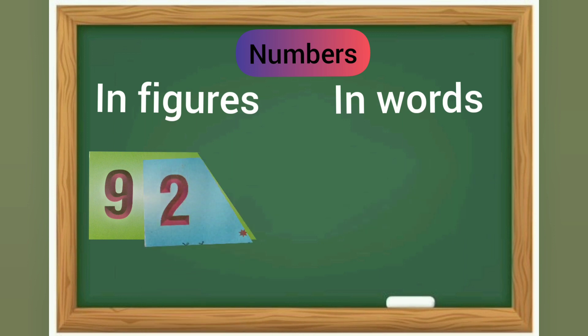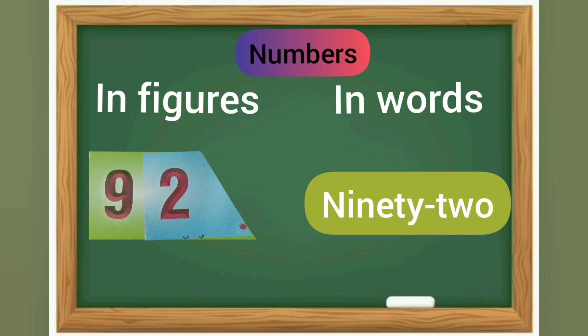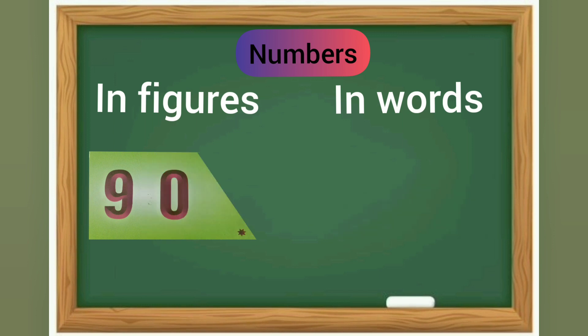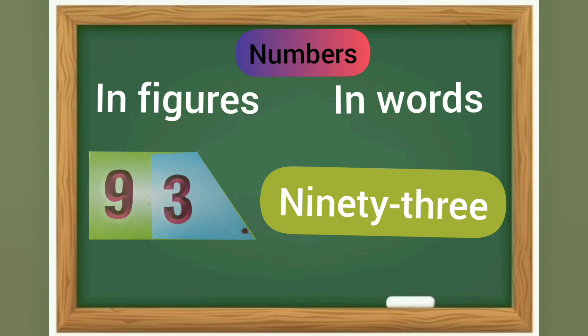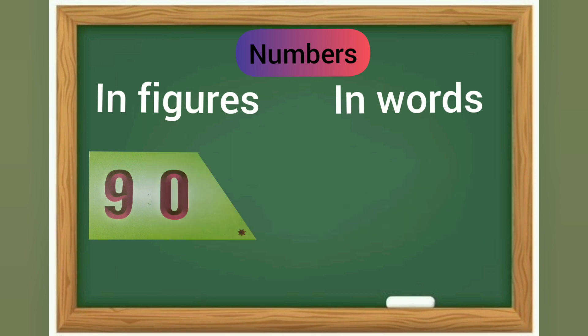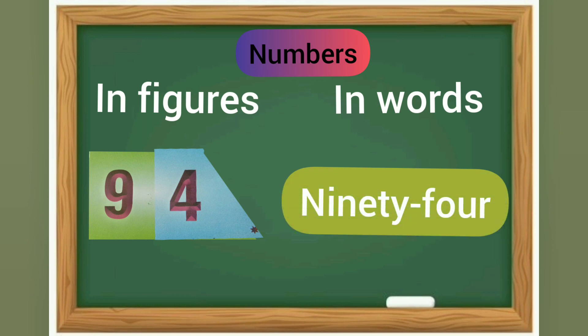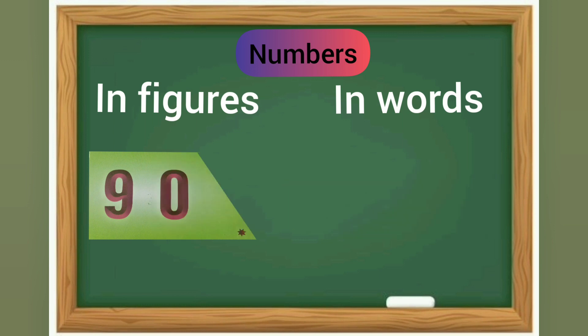90 and 2 is 92. In words: N-I-N-E-T-Y T-W-O, ninety-two. 90 and 3 is 93. In words it is N-I-N-E-T-Y T-H-R-E-E, ninety-three. 90 and 4 is 94. N-I-N-E-T-Y F-O-U-R, ninety-four. 90 and 5 is 95.